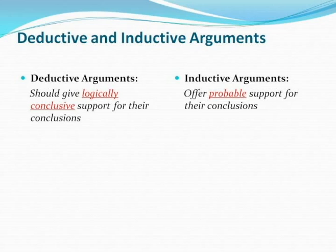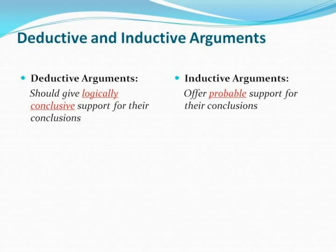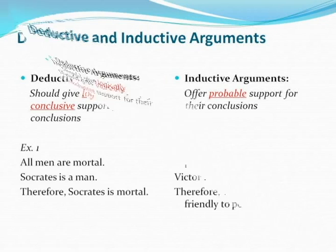Deductive arguments are arguments constructed in such a way that the premises give logically conclusive support for the conclusions. The premises of inductive arguments, on the other hand, offer only probable or likely support for their conclusions. One of the most famous examples of inductive reasoning is our belief that the sun will rise tomorrow. While we have millennia of data verifying that the sun has risen on every previous morning, except during times of eclipse, we cannot deduce from that data the certainty of the sun rising tomorrow — we can only infer based on past experience. So deductive arguments are conclusive; inductive arguments are probable.